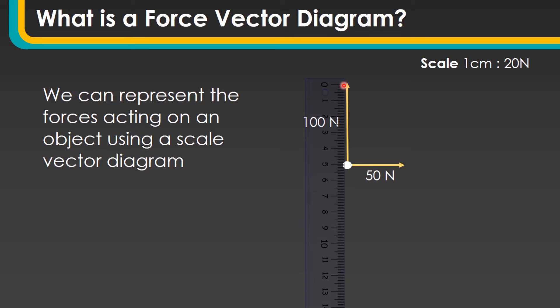I can use a ruler, and on the ruler you can see that that force arrow is 5 centimetres long, because 5 centimetres using my scale — every centimetre being 20 newtons — gets me to a force of 100 newtons.